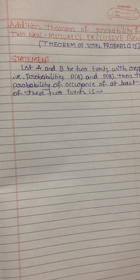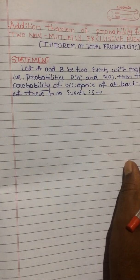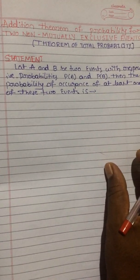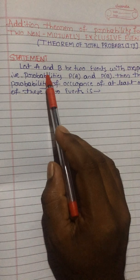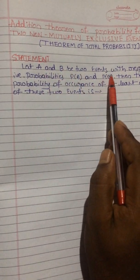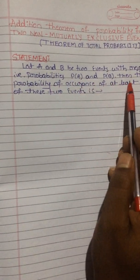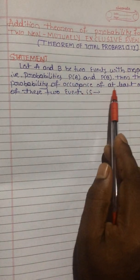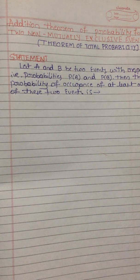Hi everyone. This video covers the addition theorem of probability for two non-mutually exclusive events, also known as the theorem of total probability. Let's start the theorem. First, you should write the statement. Consider two events A and B with respective probabilities P(A) and P(B). Then the probability of occurrence of at least one of these two events is given by the formula.